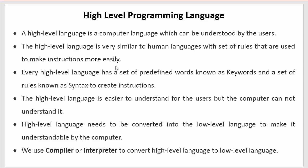Every high-level language has a set of predefined words known as keywords, and a set of rules known as syntax, to create instructions. If you want to write instructions using a high-level language then you must know these keywords — they are reserved words present in every high-level programming language such as C, C++, Java, Python, and PHP. You must also know the syntaxes. So each high-level programming language comes with a set of keywords and syntaxes that programmers need to learn before writing instructions.